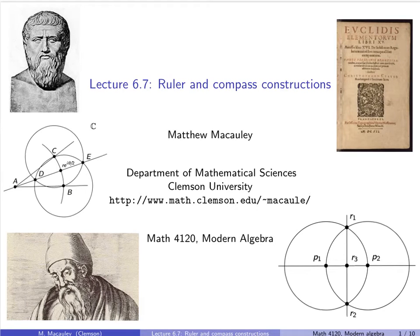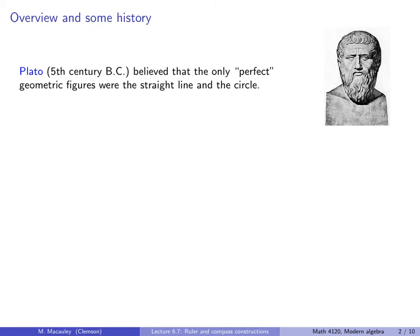Welcome to Lecture 6.7, Ruler and Compass Constructions. The ancient Greek philosopher Plato, who lived in the 5th century BC, believed that the only perfect geometric figures were the straight line and the circle. He used this to motivate his idea of perfect forms, which we now know as Platonic forms.